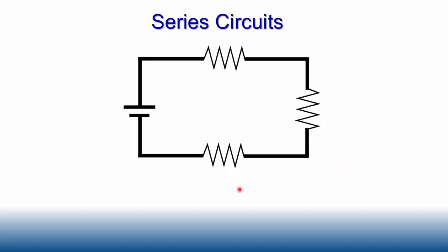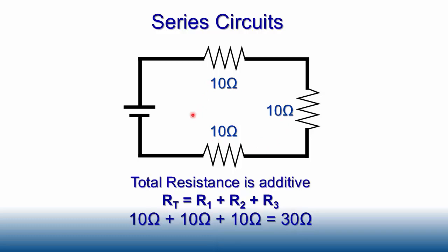A series circuit is fairly easy — you just add the resistors together. Here I've got 10 ohms, 10 ohms, and 10 ohms, giving a total resistance of 30 ohms. The formula is RT equals R1 plus R2 plus R3, so 10 plus 10 plus 10 equals 30 ohms. That's pretty straightforward.